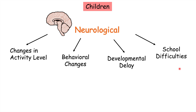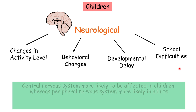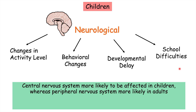School difficulties can also tie in with the developmental delay. In summary, the neurological effects are often separated by the central nervous system — brain and spinal cord — which is more likely to be affected in children, accounting for irritability, changes in activity level, behavioral changes, and developmental delay. Whereas effects on the peripheral nervous system, like wrist drop, are more likely to occur in adults.